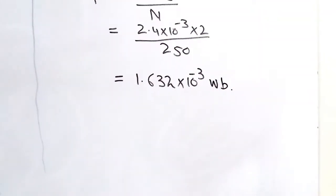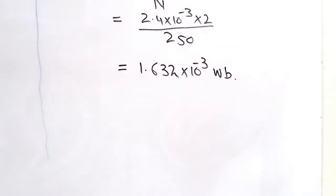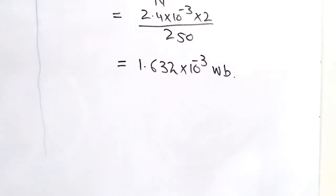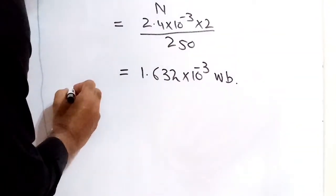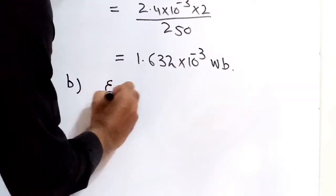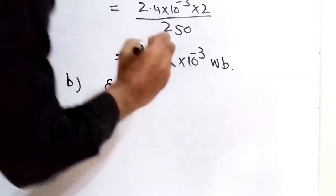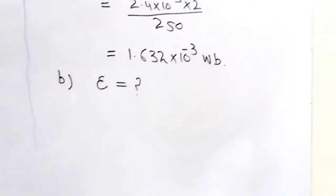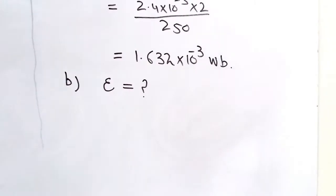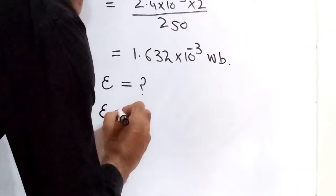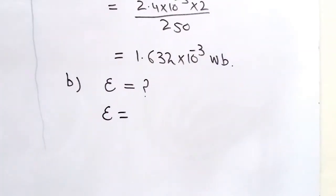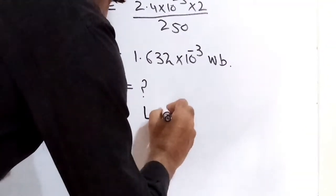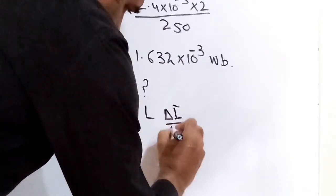Now we have to find the second part, in which we have to find the EMF. For this we have the formula: EMF induced equals L delta I over delta T.